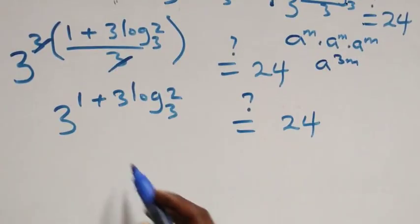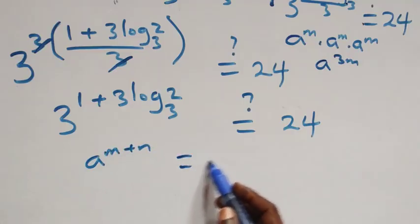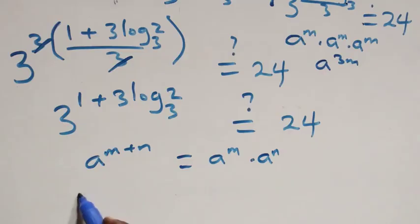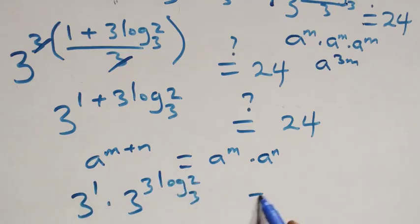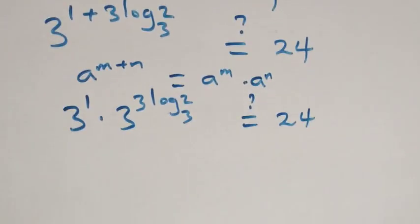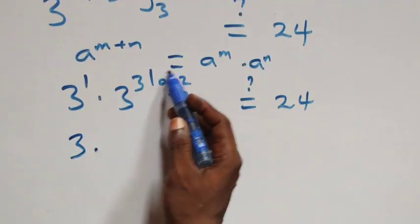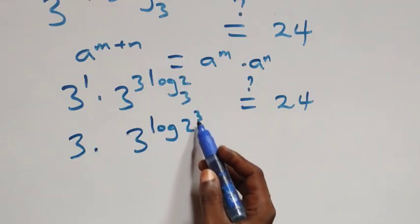This follows from a law of indices: when we have a raised to power (m plus n), this is the same as a raised to power m times a raised to power n. So what we have here becomes 3 raised to power 1, times 3 raised to power 3 log₃2.